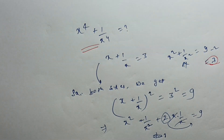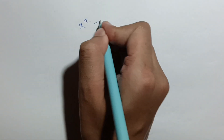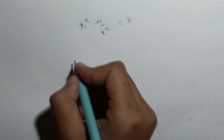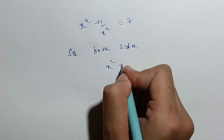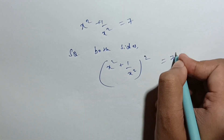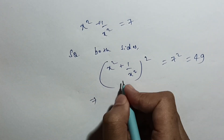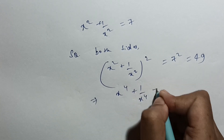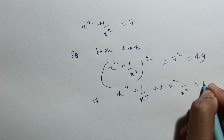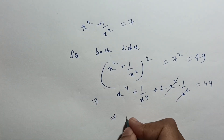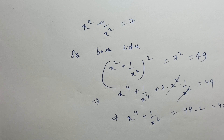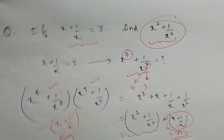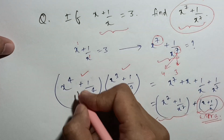Now I want x raised power 4, so I will square again. I have x square plus 1 by x square equal to 7. Squaring both sides gives x square plus 1 by x square, whole square equal to 49. Using the same formula, x raised power 4 plus 1 upon x raised power 4 plus 2 times x square times 1 by x square equals 49. That 2 cancels, so x raised power 4 plus 1 upon x raised power 4 equals 49 minus 2, which is 47.